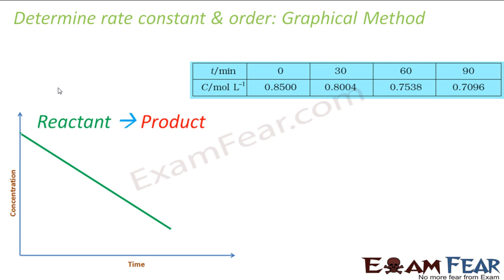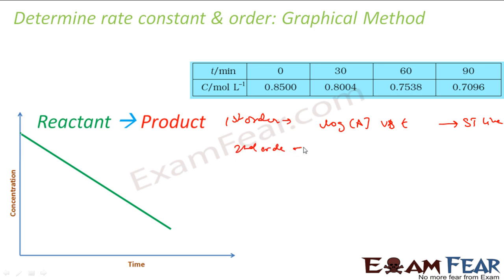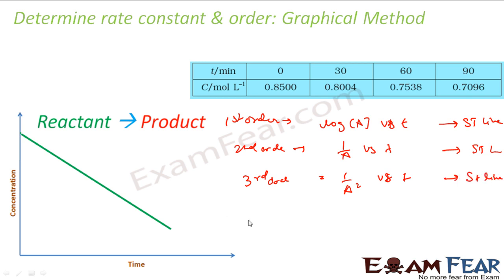Next is the graphical method. We know that if log(a) versus t is a straight line, it is a first-order equation. If it is a second-order equation, then 1/a versus t will be a straight line. If it is a third-order equation, then 1/a² versus t will be a straight line. If it is a zero-order equation, then a versus t will be a straight line.